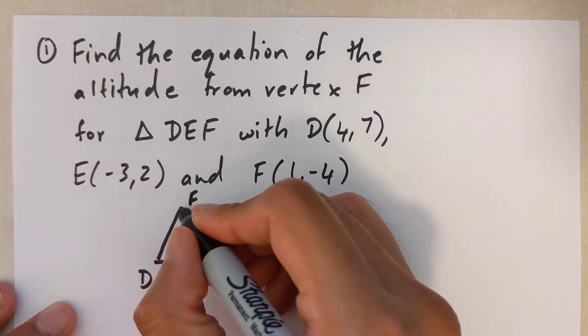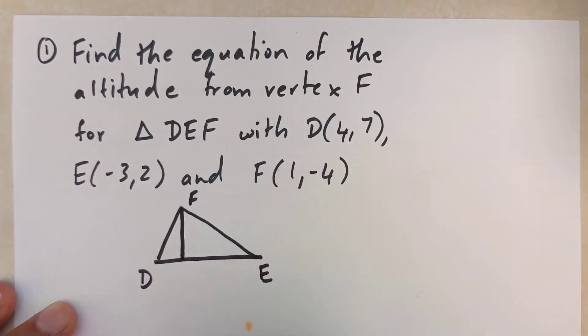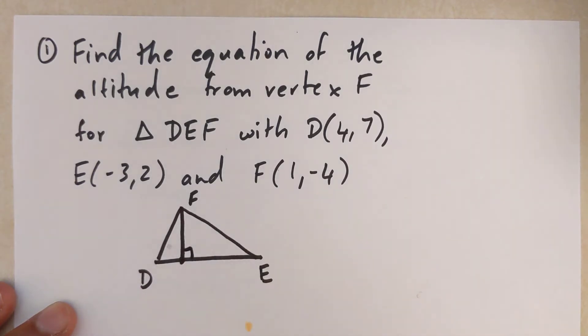The altitude always starts on your vertex as a straight line going down. This point right here we don't know what that point is, it's not the midpoint, but we know that these two lines make 90 degrees.